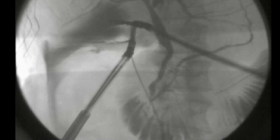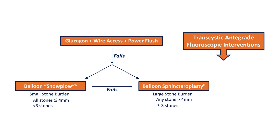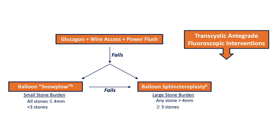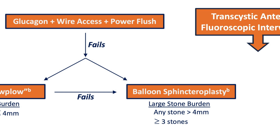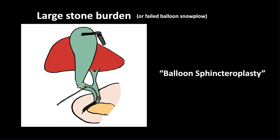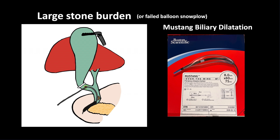For a small stone burden, if wire access plus a power flush and balloon snowplow fail, or if you have a large stone burden to begin with, the next step in the transcystic antigrade algorithm is balloon sphincteroplasty. Balloon sphincteroplasty is intended for a large stone burden or if a balloon snowplow fails. This entails blowing up a balloon across the ampullary sphincter to no more than the greatest diameter of the common bile duct as measured on fluoroscopy. For this, we use the Boston Scientific Mustang biliary dilatation balloon, using the 75 cm catheter and 6 cm or 60 mm balloon length. We use the 6 cm balloon length as anything smaller is prone to pop out of the sphincter during the dilation process.